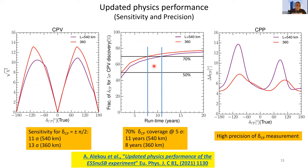The fraction of delta CP values for which CP violation can be discovered at five sigma as a function of running time shows we can reach 70% for the default baseline after eight years, gaining three years compared to the alternative baseline. The right panel shows the precision capabilities: the default baseline reaches less than 8% precision on delta CP values for maximal CP violation. These results have been published recently in the European Physics Journal.